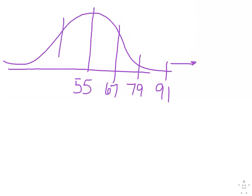Then, if I go left of it, what's one less than 55? Or, 55 minus 12? 43. What's two less? What's 43 minus 12? 31. What's three less? 31 minus 12? 19. And then everything less than 19.